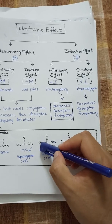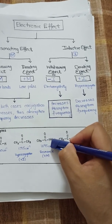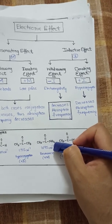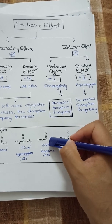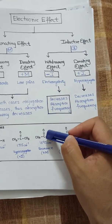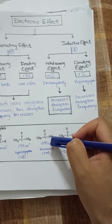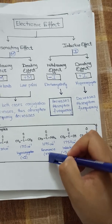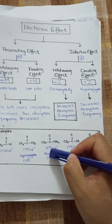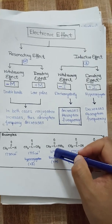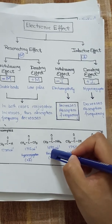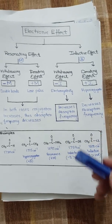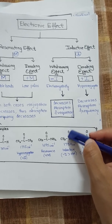When the carbonyl group is attached with an amino group, it becomes acetamide. In this case, the NH₂ nitrogen has a lone pair of electrons which causes a resonating effect — specifically an electron donating resonating effect. Due to this, the absorption frequency decreases more, from 1715 cm⁻¹ down to 1695 cm⁻¹.